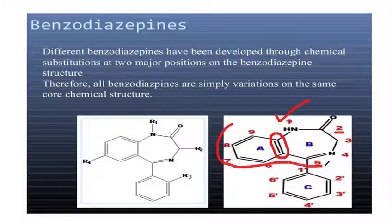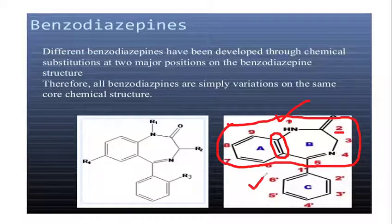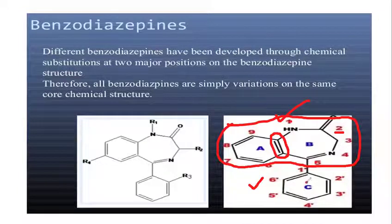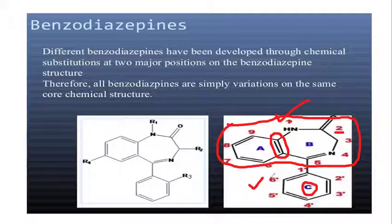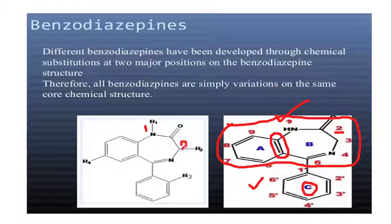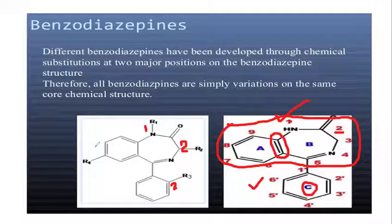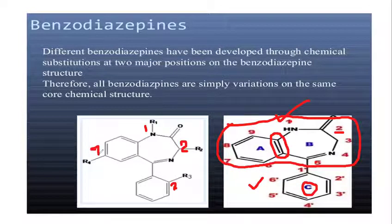Ring C is labeled independently with positions 1 through 6. The 4 key positions are: R1 on position 1, R2 on position 2, an aromatic ring substitution at position 2 of Ring C, and position 7. These are the total 4 important positions. Benzodiazepine is the class name — different drugs differ only in these 4 positions.